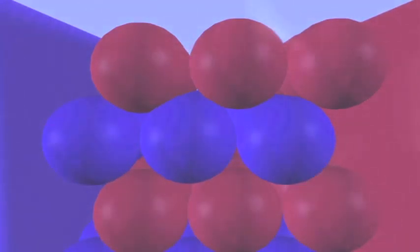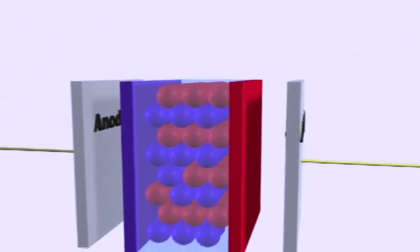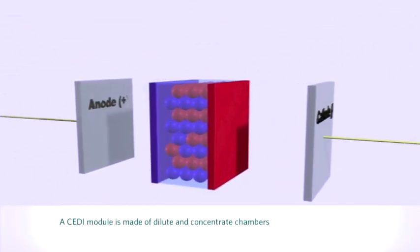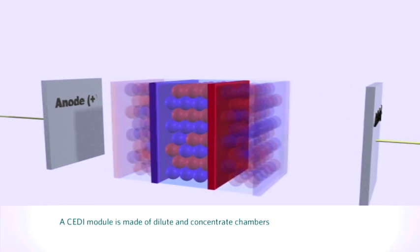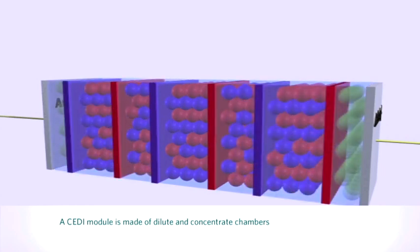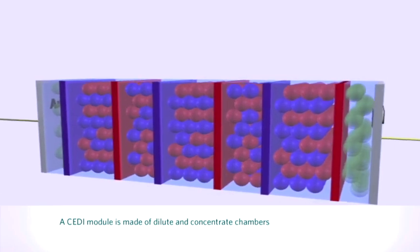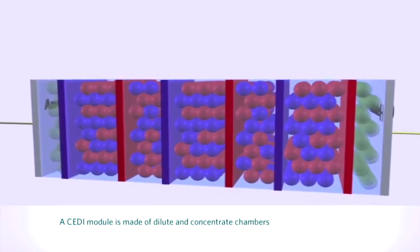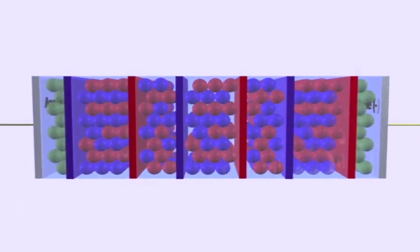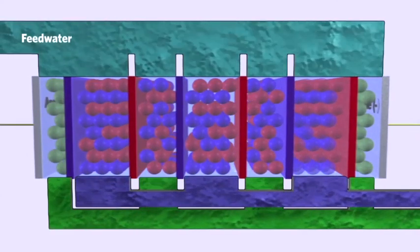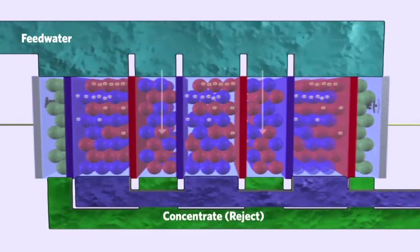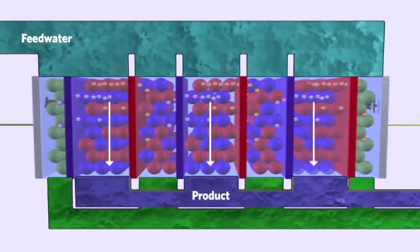Taking a step back to look at how an IonPure CEDI module is constructed, we can see that if we move the electrodes farther apart and continue to add resin beads sandwiched between the cation and anion-selective membranes, we create a series of water purification compartments alternating with compartments where the ions are concentrated. As feed water is pumped into the system, it is diverted into separate compartments, mainly the concentrating compartment and the purification or dilute compartment.